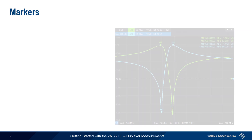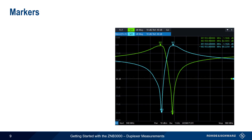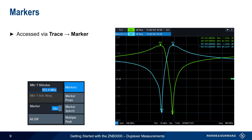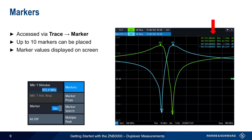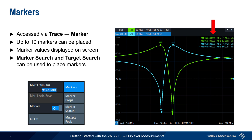Markers are a convenient way to analyze traces and obtain numeric results, and these can be accessed via Trace → Marker. Up to 10 markers can be placed, and the numeric value for each marker is also shown on screen. In addition to manually placing markers, two special marker functions — Marker Search and Target Search — can be used to place markers on specified values, such as the trace max or min, or user-defined values.